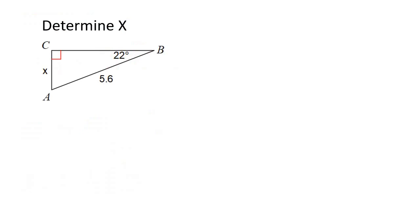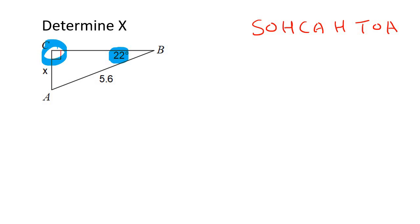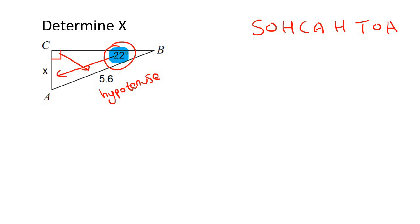Let's see how this works. We always start by writing SOH-CAH-TOA. We take the angle that they've given you — which is this one over here; we never use the 90 degree. Now let's go label our triangle. The side opposite the 90 degree is always called the hypotenuse. The one opposite the angle that we are using is called the opposite, and then the other side is what we call the adjacent.